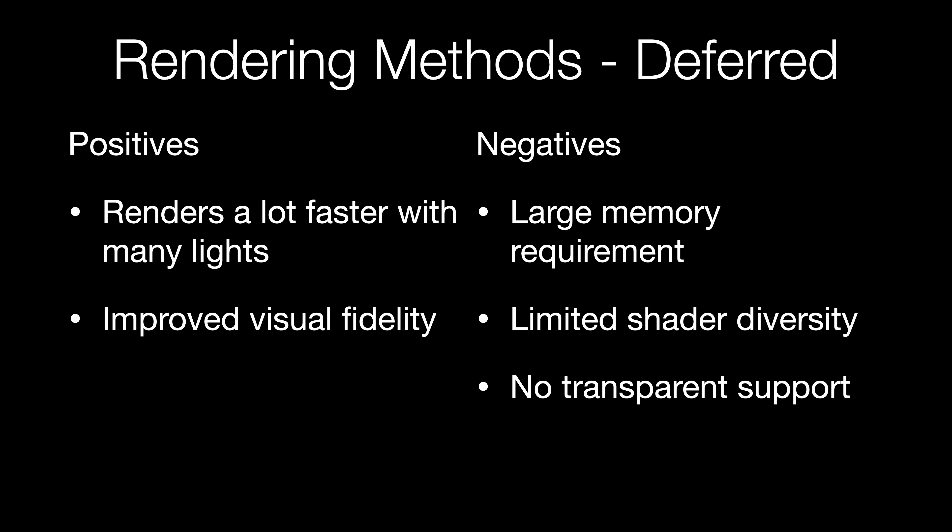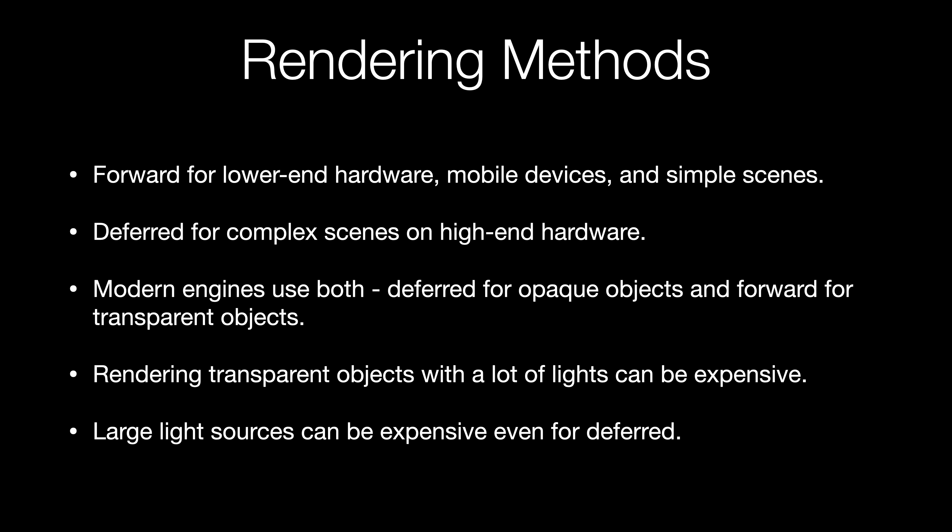With these positives and negatives in mind, let's talk about how the methods are used. Forward rendering is most commonly used for lower-end hardware like mobile devices, and it's also great for scenes with just a few light sources. Deferred rendering is great for complex scenes rendered on higher-end hardware like PCs or consoles. Most modern game engines use both methods. In Unreal, for example, deferred rendering is used for the opaque objects in the scene, and then the transparent objects are rendered afterward in a separate stage that uses forward rendering, which allows the transparent objects to be sorted from back to front.